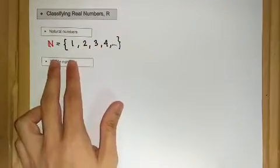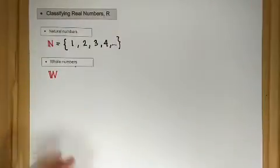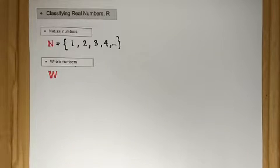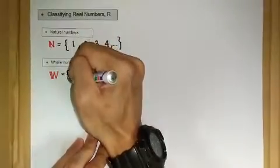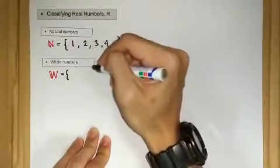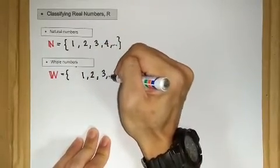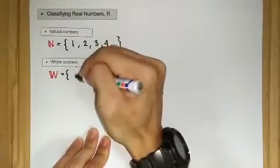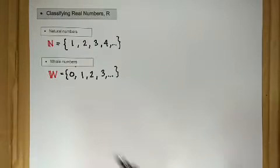The second type is what we call whole numbers, denoted by capital W. Whole numbers are basically just natural numbers including zero. So the elements of whole numbers are: curly bracket, one, two, three, and so on, including zero.